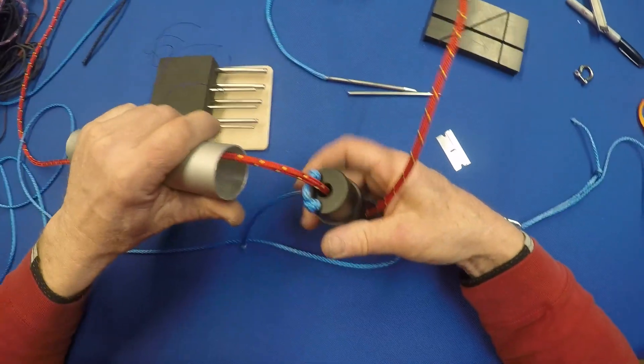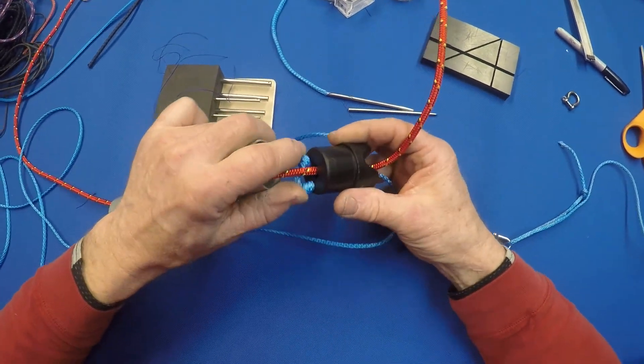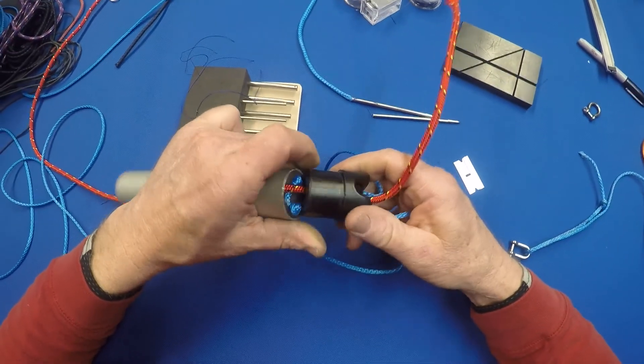Otherwise, this is pretty much a standard spinnaker pole plug other than the bearing I've added to it. So you want to have two knots in there so that thing cannot move either way.